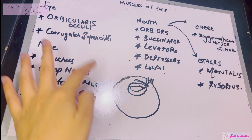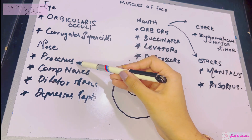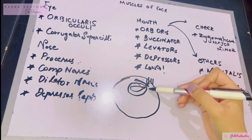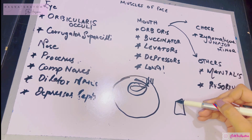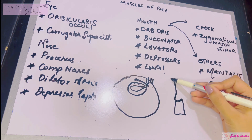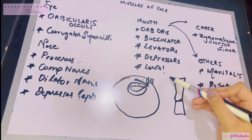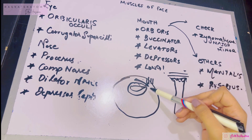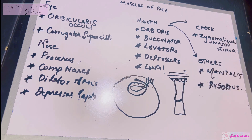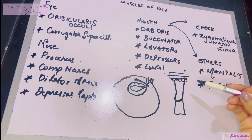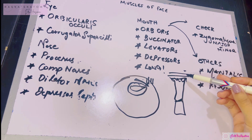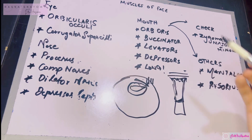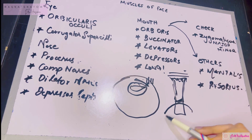Now the muscles of the nose. The procerus muscle goes from the nose up to the forehead area and causes transverse wrinkling — unlike the corrugator, which caused vertical wrinkling. The procerus is also involved in expressions of anger or frowning. Then we have the compressor nares, which runs over the nose and causes compression of the nasal openings.